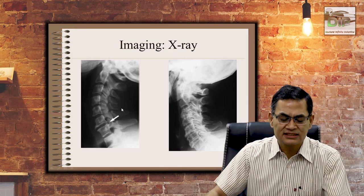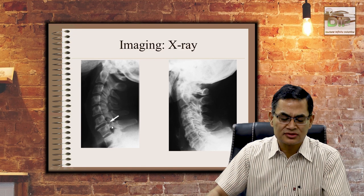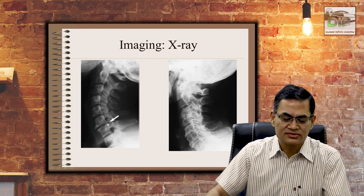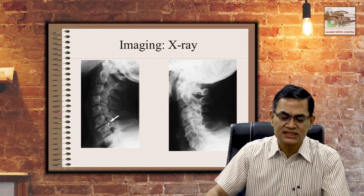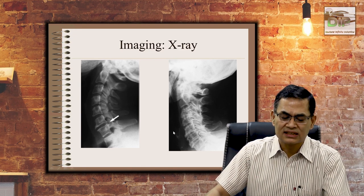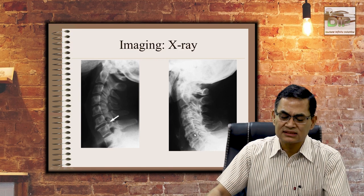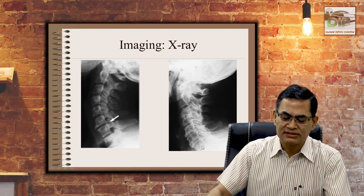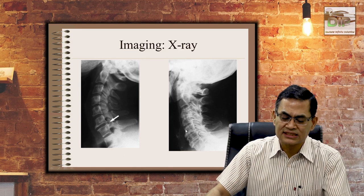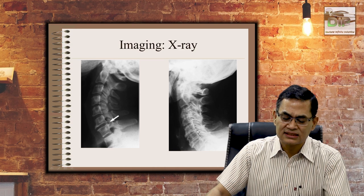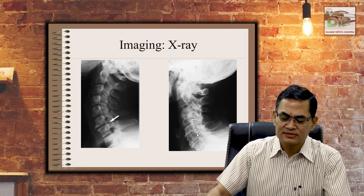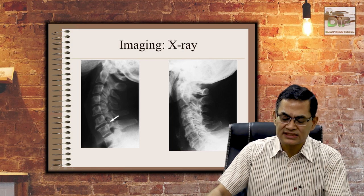This X-ray shows osteophytes — the arrow is pointing to them. Multiple levels are involved. The end plates are irregular, there is subchondral sclerosis throughout, and multiple posterior osteophytes are visible.